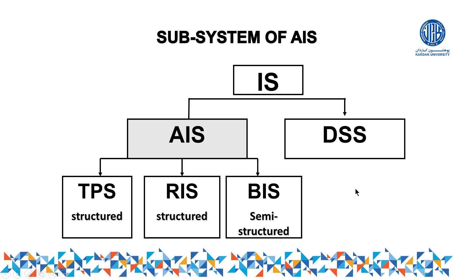BIS — Budgeting Information System — is called semi-structured because while making a budget we deal with both the past and the future. We check past records of the business and consider specific criteria or indicators to make a budget for the future. That is why BIS links with the past as well as the future, making it semi-structured. DSS, on the other hand, is totally unstructured.